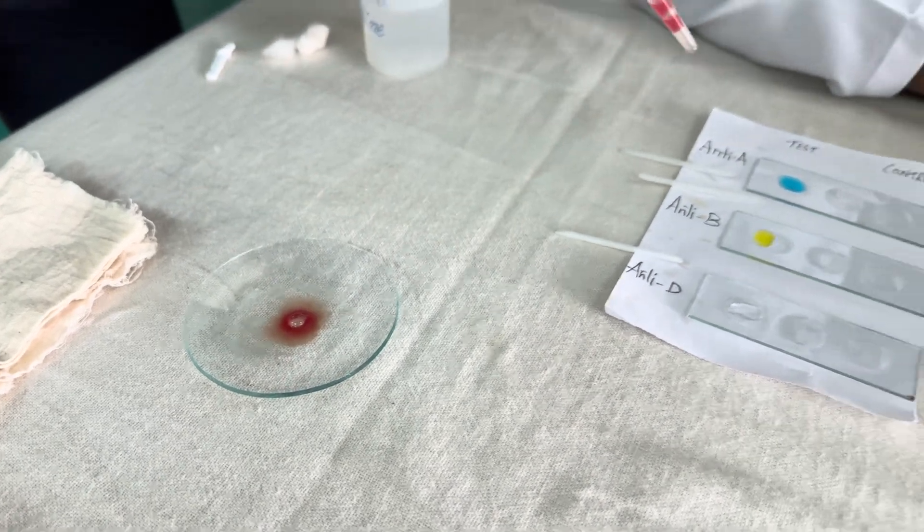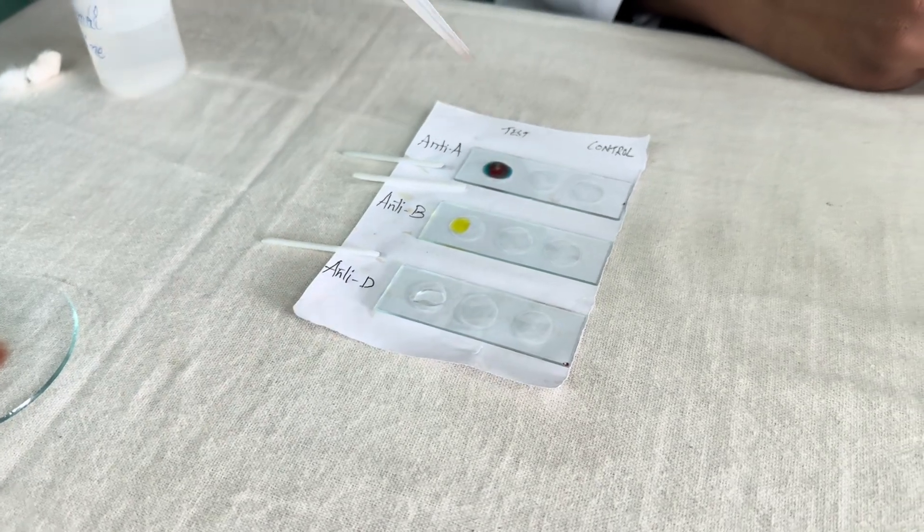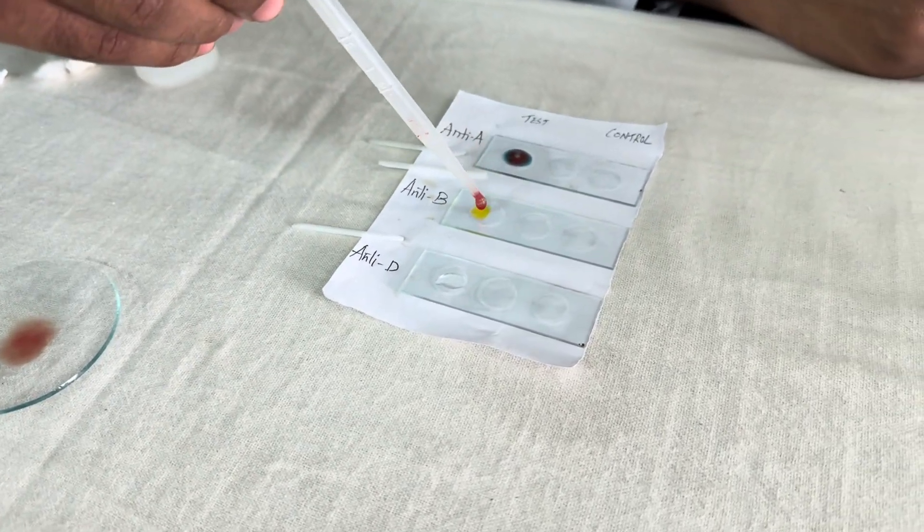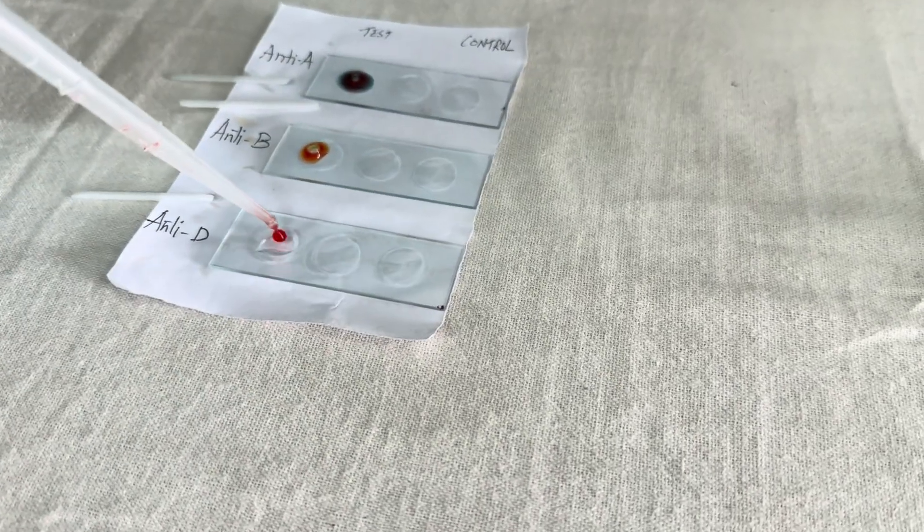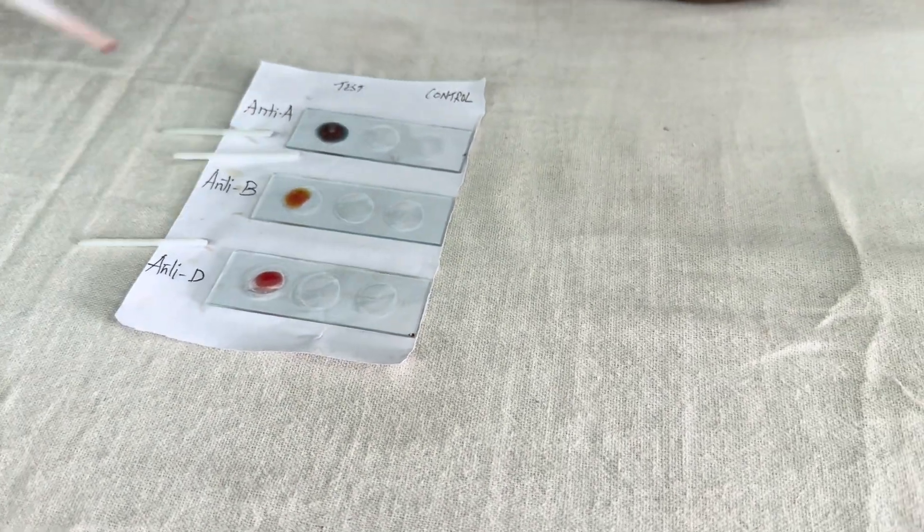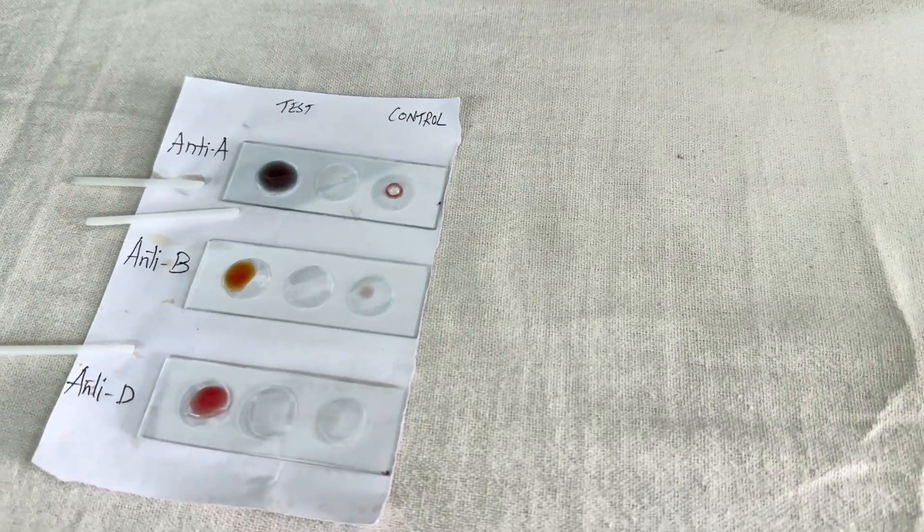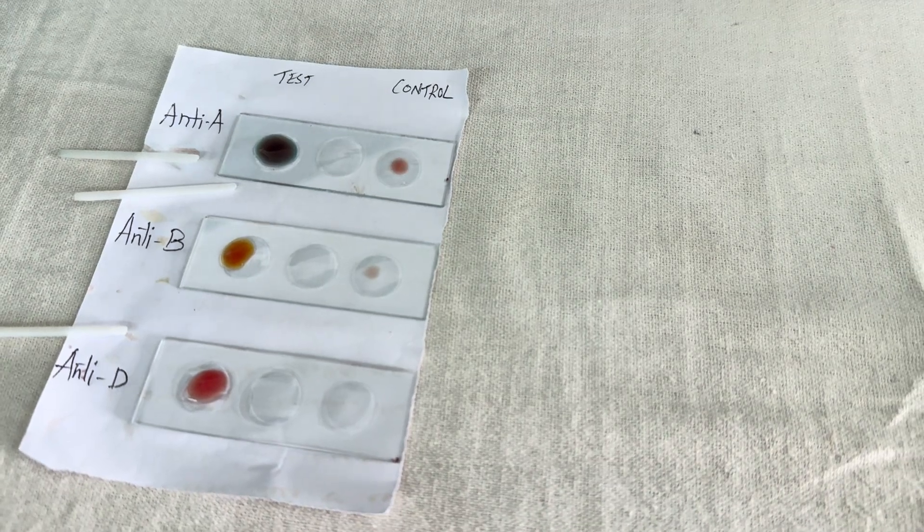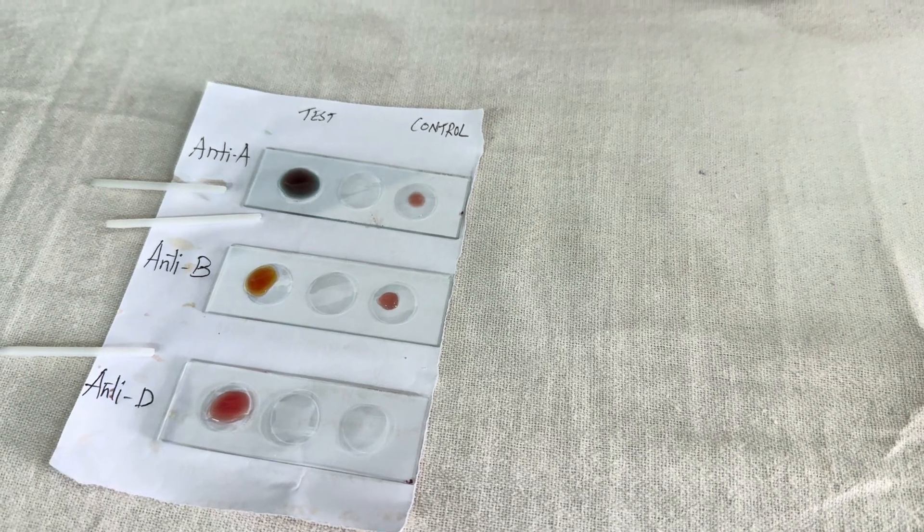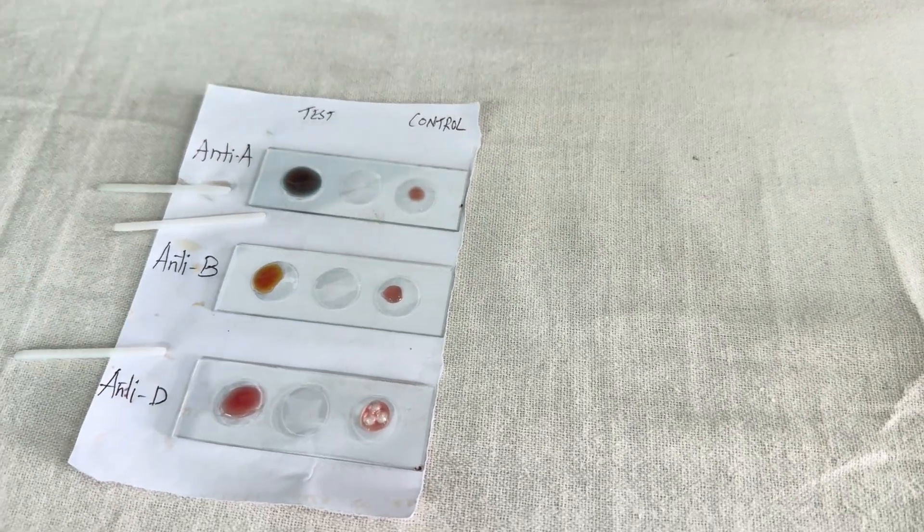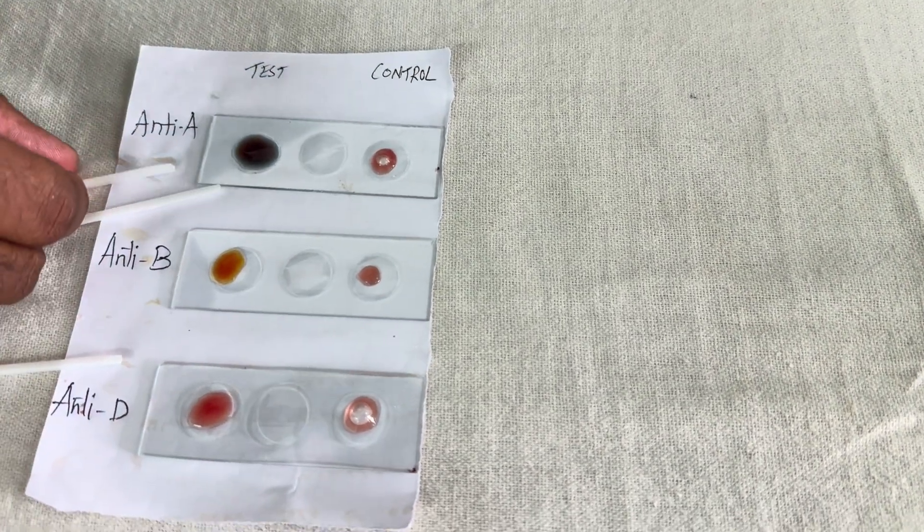Then with aseptic precautions again, put one or two drops of that normal saline and blood mixture, the RBC suspension or red cell suspension, into the anti-A, anti-B, and anti-D anti-sera, also on the control. We take the control so that if by mistake there is a mixture of things, we can see that the results we get are not due to mistake.